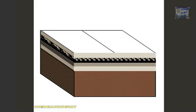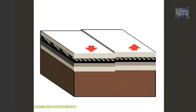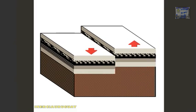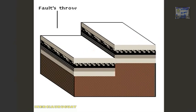The amount of vertical displacement is called the fault's throw. Faults vary in throw from a few meters to hundreds of meters.